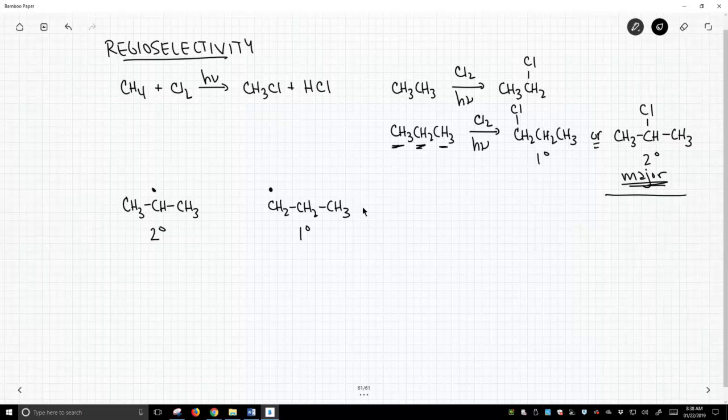So the observed regiochemical outcome is driven by the stability of the intermediates that lead to that product. This is really not that different from something like Markovnikov's rule, where we formed the more highly substituted alcohol because we wanted to go through the more highly substituted carbocation. Well, now we just want to go through the more highly substituted radical.